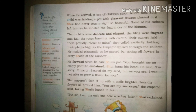The Emperor noted pleasantly as he passed by, noting the flowers in every shade of the rainbow - just like the rainbow has so many colors, there were so many colorful flowers before the Emperor. Then he frowned when he saw Shui's spot. The Emperor was frowning - looking angrily - at Shui's empty pot. 'You brought me an empty pot!' he exclaimed. Shui hung his head in disappointment and said: 'I'm sorry, Emperor. I cared for my seed, but as you see, I was not able to grow a flower for you.' The Emperor's face lit up with a smile brighter than all the flowers around him.